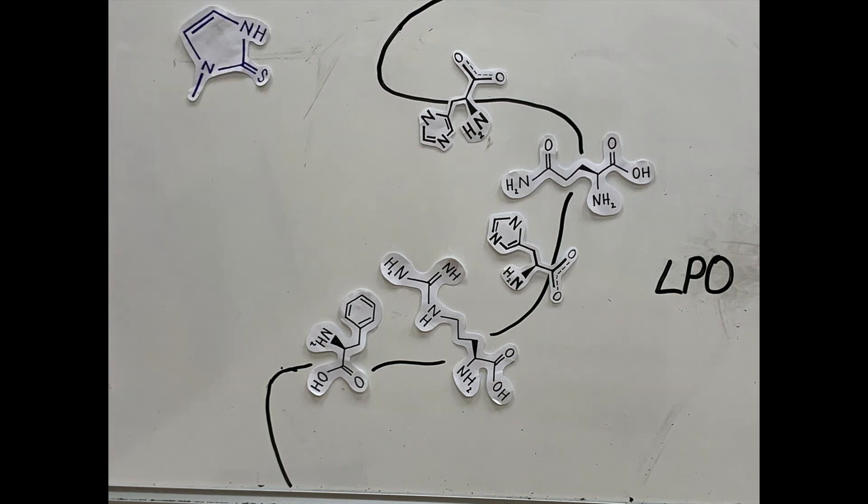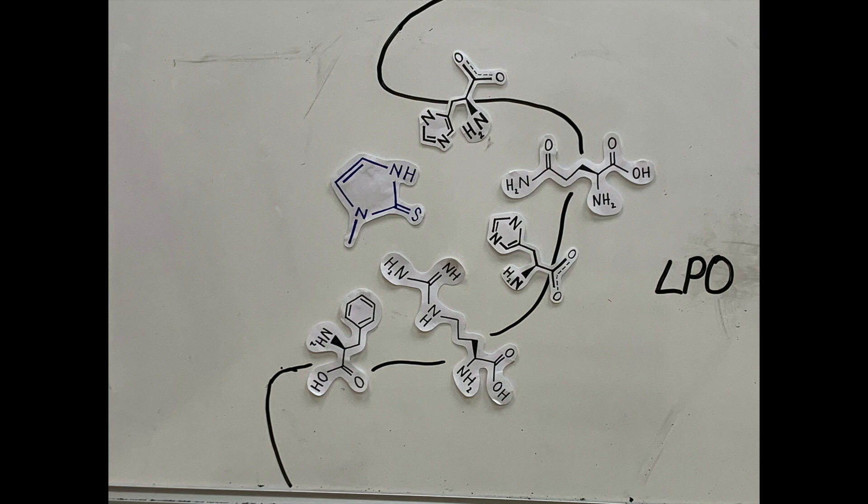X-ray structures have shown that methimazole can enter the substrate binding channel in two opposing orientations, but once it reaches the distal heme pocket, the orientation is fixed.